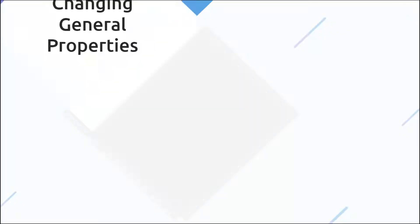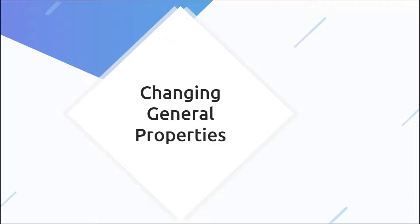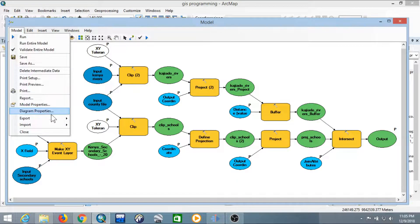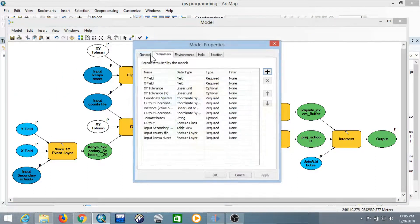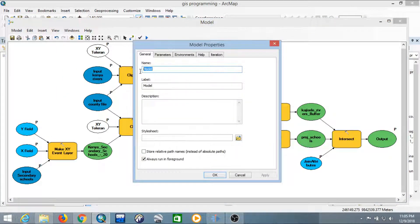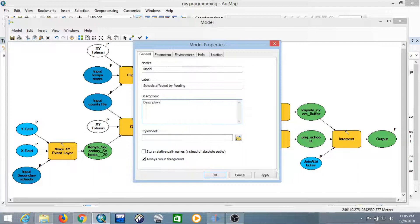Finally, we'll change the general model properties. Go to Model, select Model Properties, then change the label to 'Schools Affected by Flooding' and give it a description. Select 'Store relative path names instead of absolute paths', then click OK.